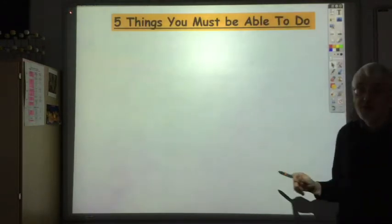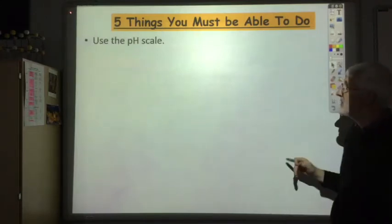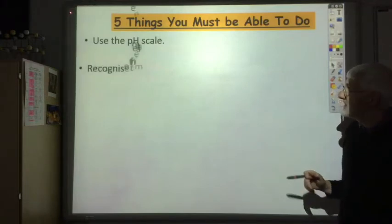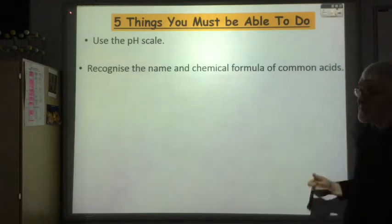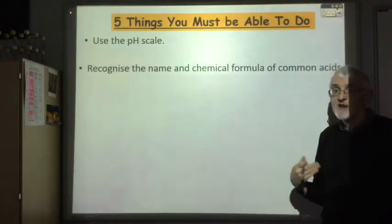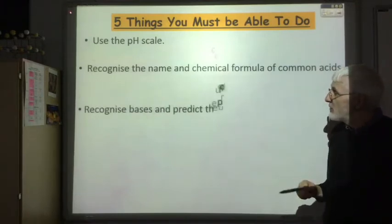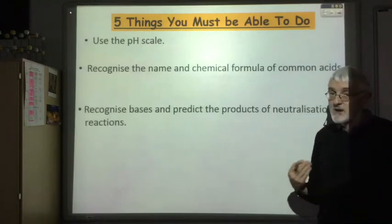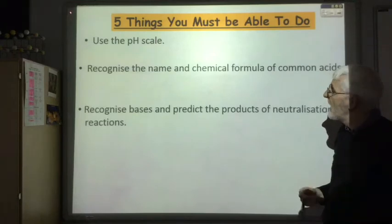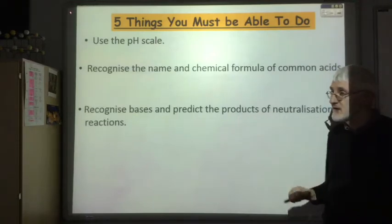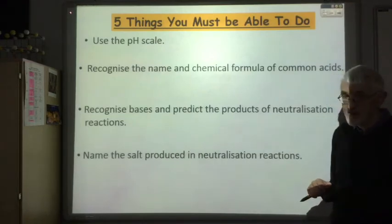Finally, five things you must be able to do for acids and bases: use the pH scale; recognise the name and chemical formula for the three common acids — sulfuric, nitric, and hydrochloric; recognise bases — metal oxides, metal hydroxides, metal carbonates, and reactive metals — and predict products of neutralisation reactions; name the salt produced in neutralisation reactions; and carry out calculations based on titrations.